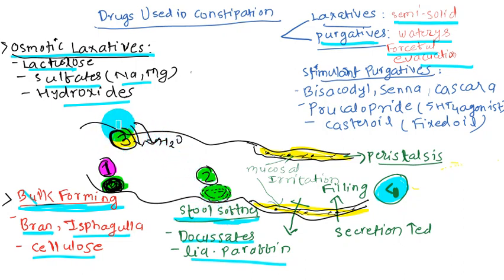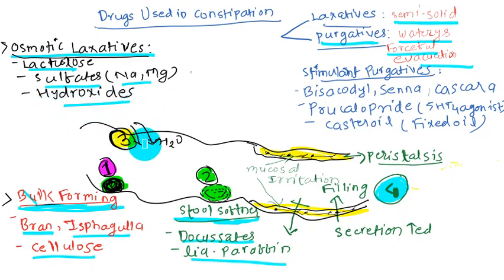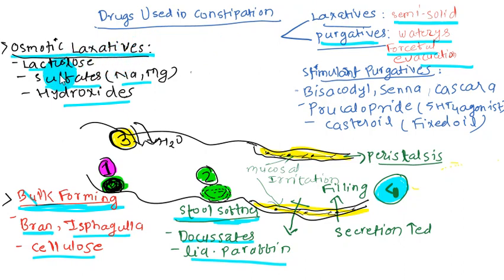The third group is osmotic laxatives. Examples include lactulose — which is also used in hepatic encephalopathy — as well as sodium and magnesium sulfates, and hydroxides. These act osmotically by drawing water into the intestinal lumen. Lactulose is a semi-synthetic disaccharide of fructose and lactose; being indigestible, it is broken down by intestinal bacteria into osmotically active products, drawing water into the lumen and aiding bowel evacuation.